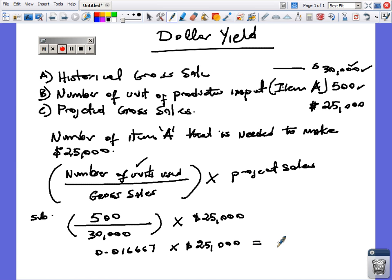And we have 416.67 units of A. We could round up to 417 units of item A to achieve a gross sale of $25,000. Let's work another example.